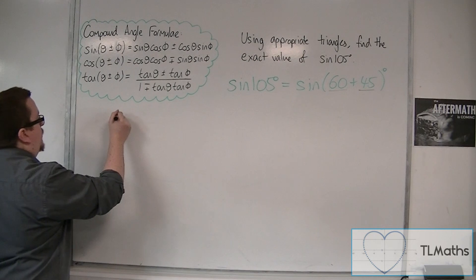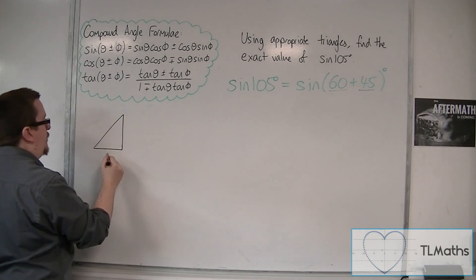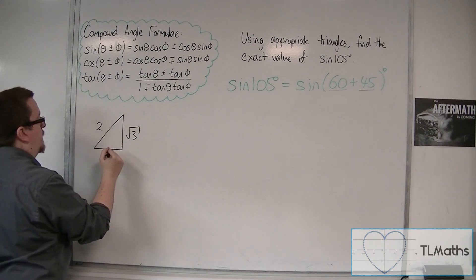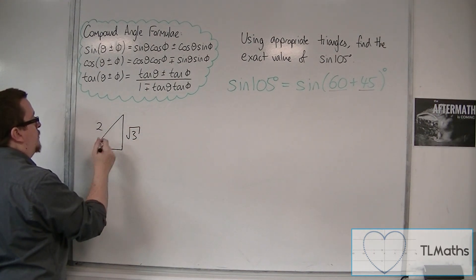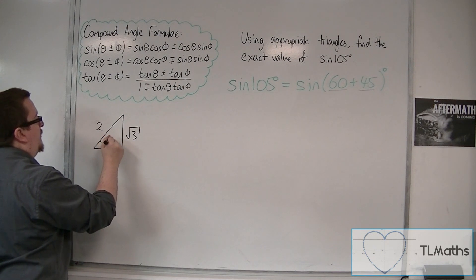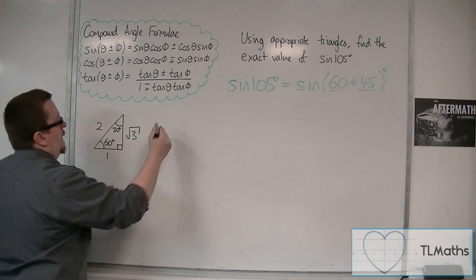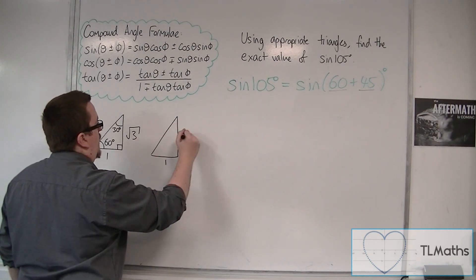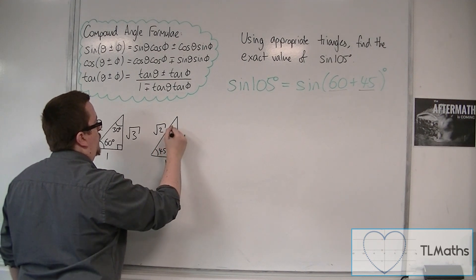So the two triangles — to remind you of what they looked like — you've got 1, 2, root 3. That's the shorter side, so this is the larger angle: that's 60 degrees, and that's 30 degrees. And the other triangle is 1, 1, root 2, and both of these angles would be 45 degrees.